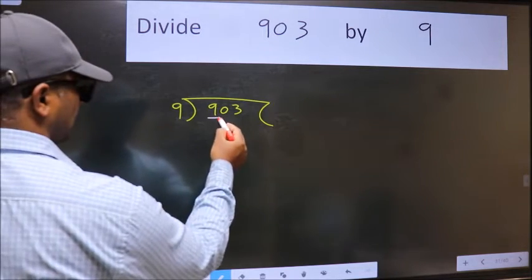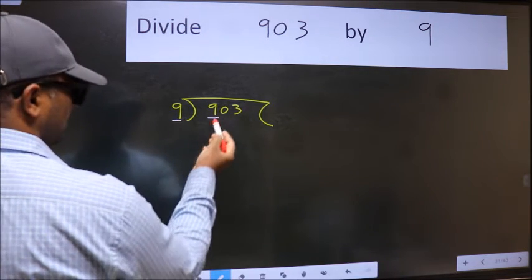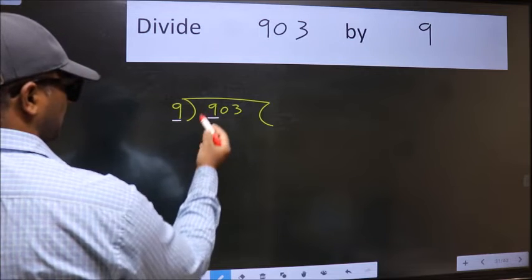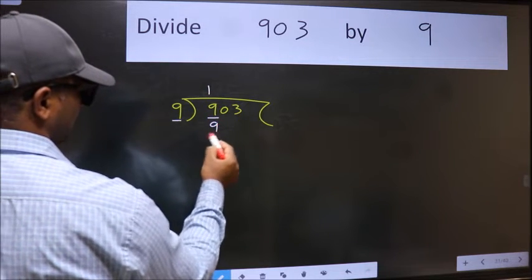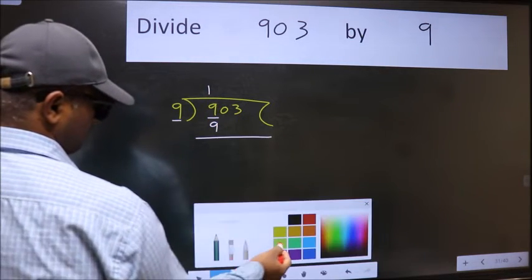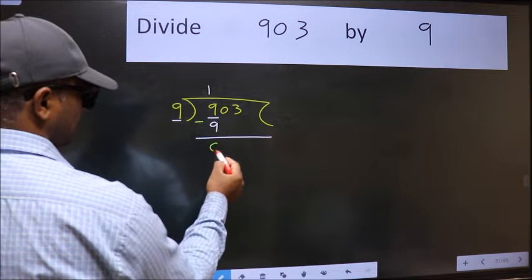Here we have 9 and here 9. When do we get 9 in 9 table? 9 once 9. Now we should subtract. We get 0.